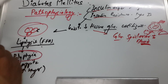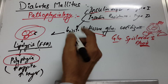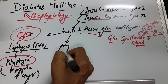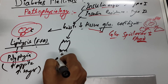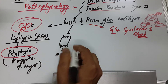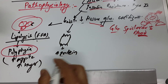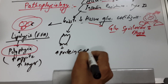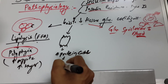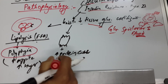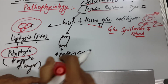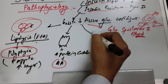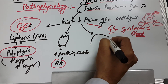Now what is happening in the muscles? In the muscles, proteins are catabolized and amino acids are released. So from the muscles, amino acids are released.